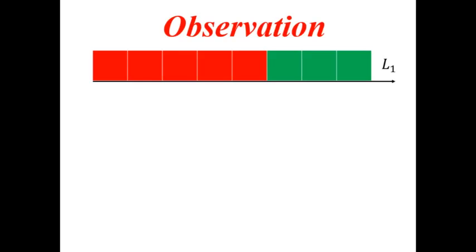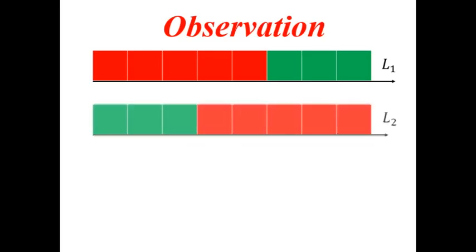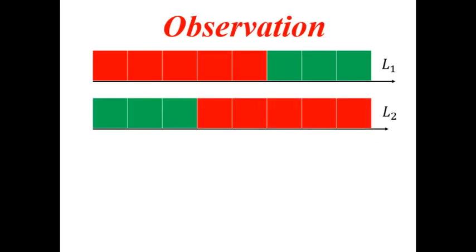Next, is observation. What we have observed from our activity. So, this is line L1, where the red strips and green strip are pasted. So, this is L2, where first the green strip and then the red strip are pasted.